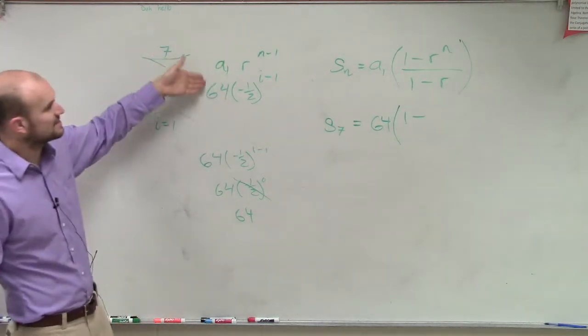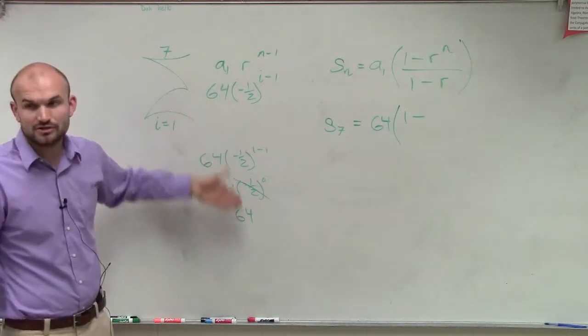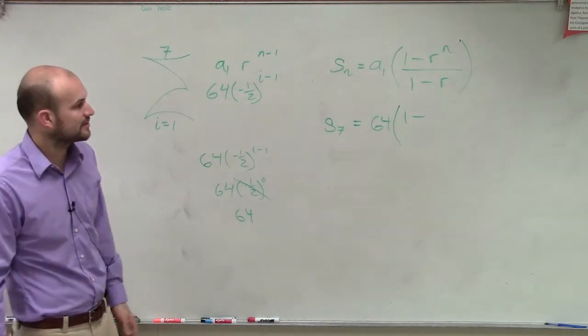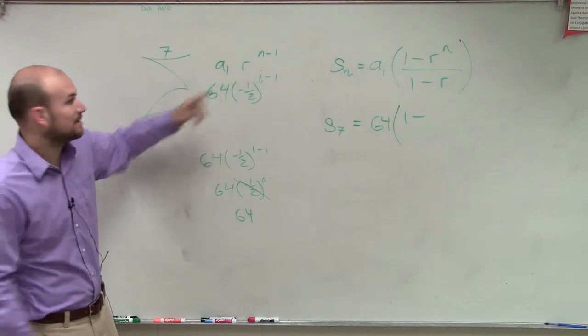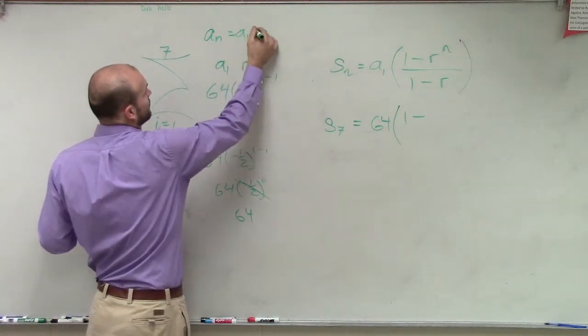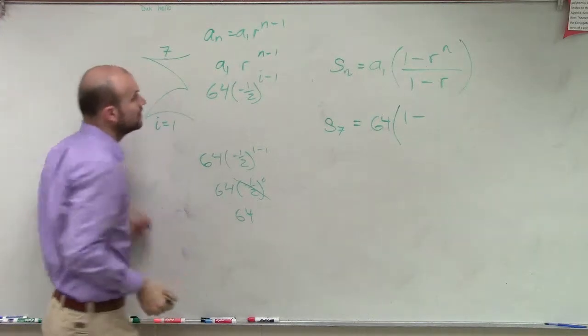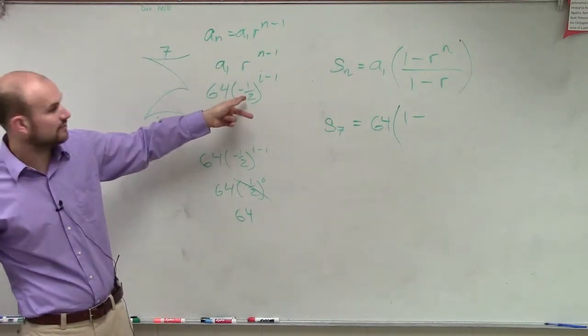Yeah, A sub 1, it's pretty obvious that's your 64. But you should always just go and check it just to make sure there's nothing else crazy going on. Then you guys can also determine from our formula. Remember, this is like the geometric formula: A sub n equals A sub 1 times r to the n minus 1. We know that r is going to be negative 1 half.